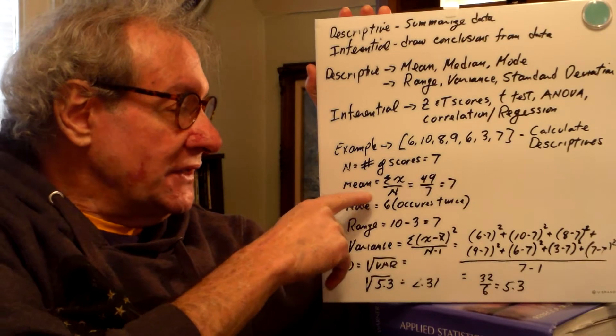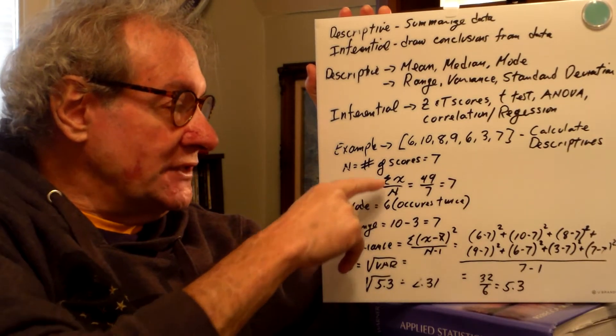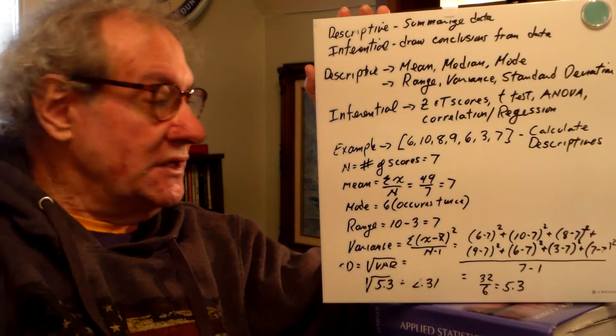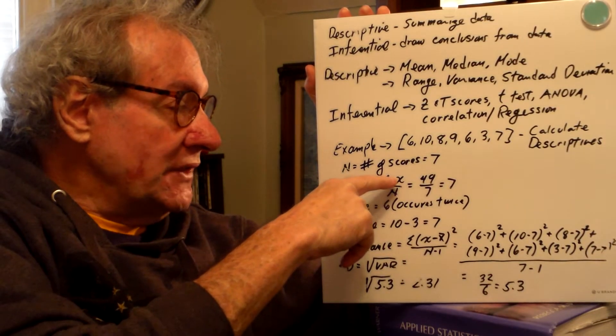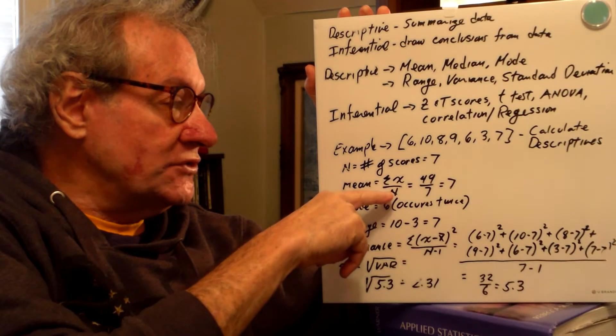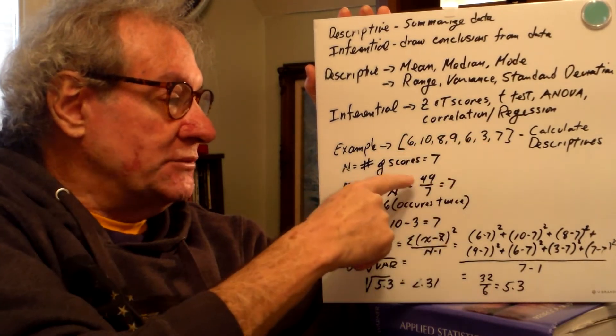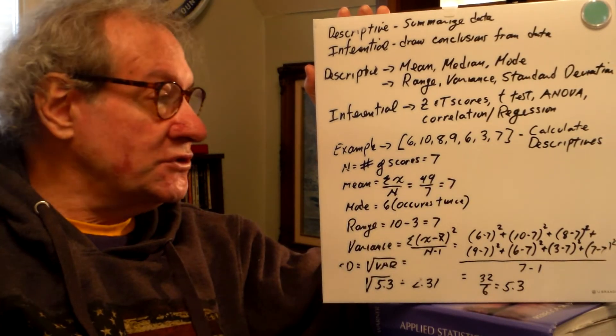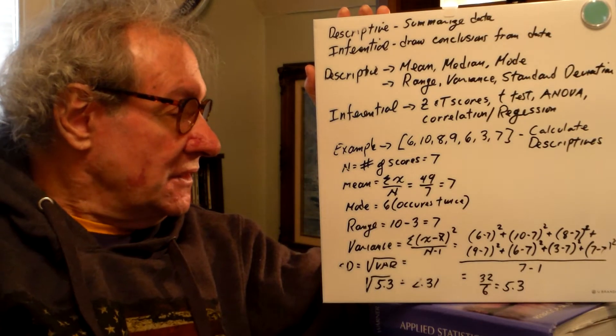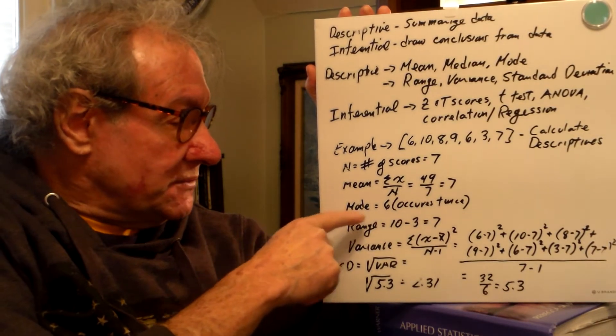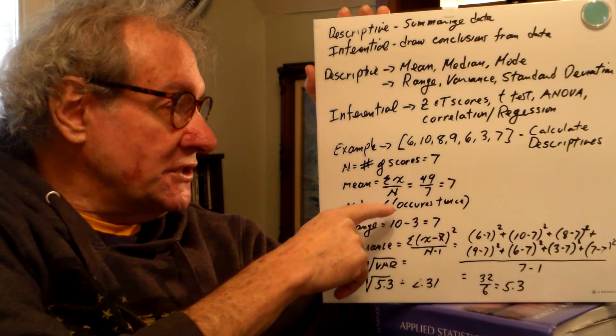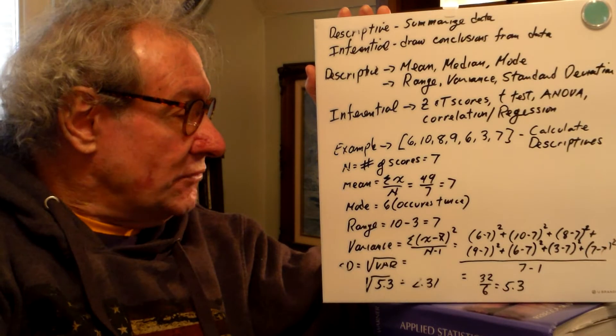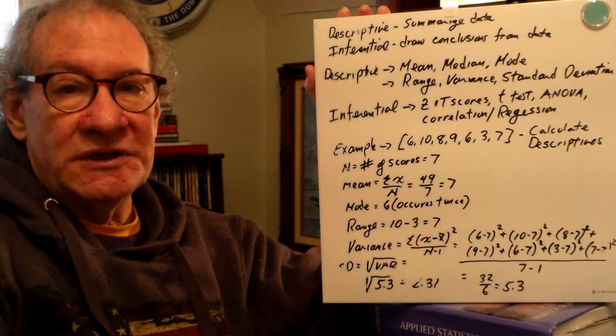So to do that, we can calculate the mean. The mean is equal to this little thing that looks like an E means add up. It's a capital letter sigma. So we're going to sum each individual score, and then we're going to divide by the number of scores. And if you add these scores up, it comes to 49, and 49 divided by 7 is 7. So the mean of these distribution is 7. The mode of the distribution is 6, because the score of 6 occurs more often than any other score.